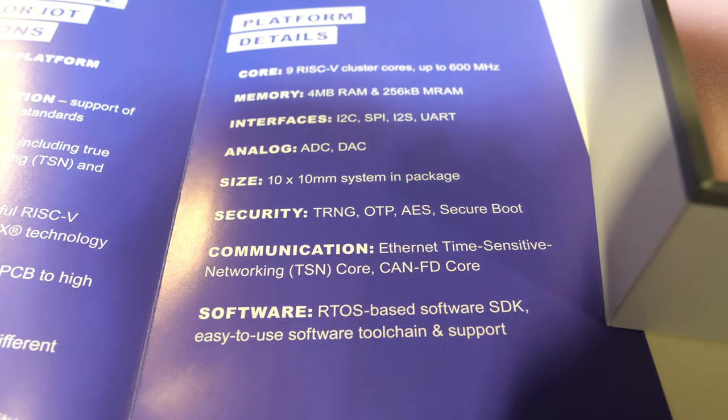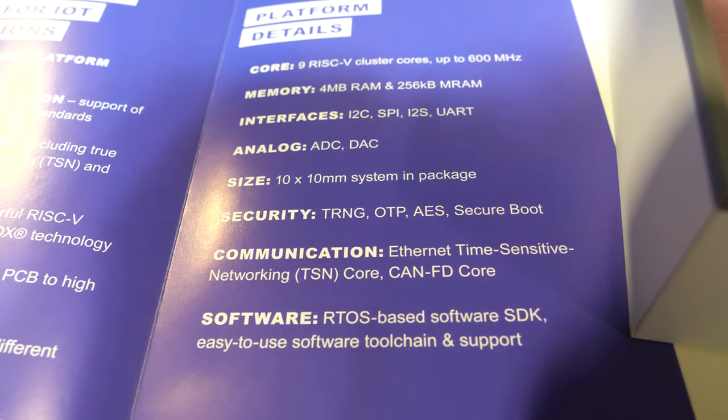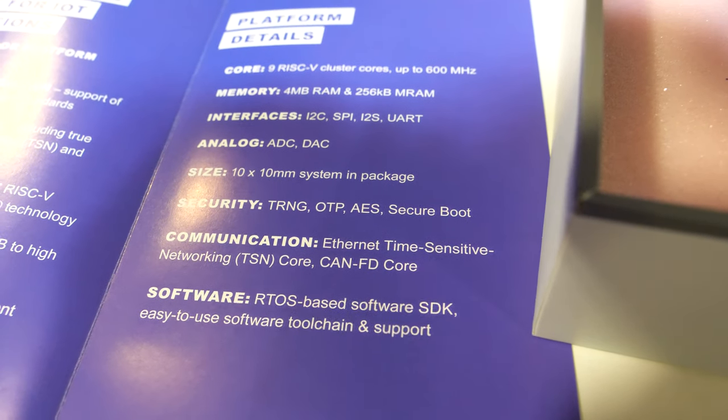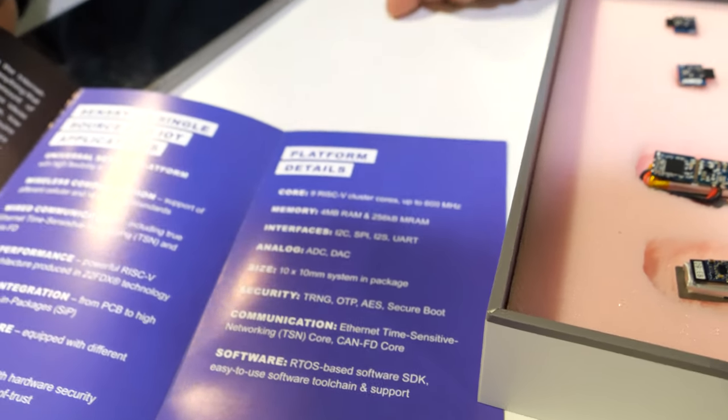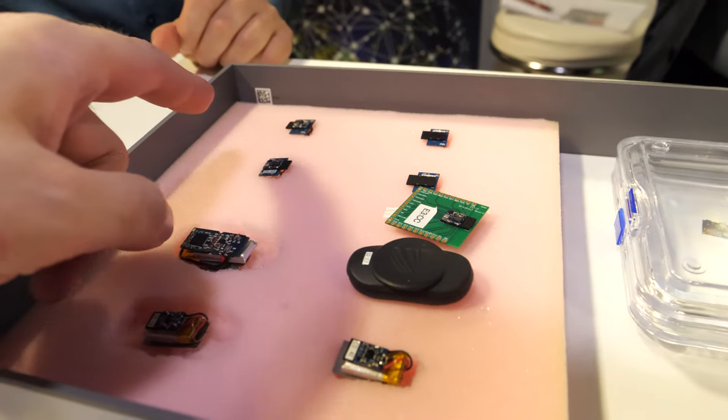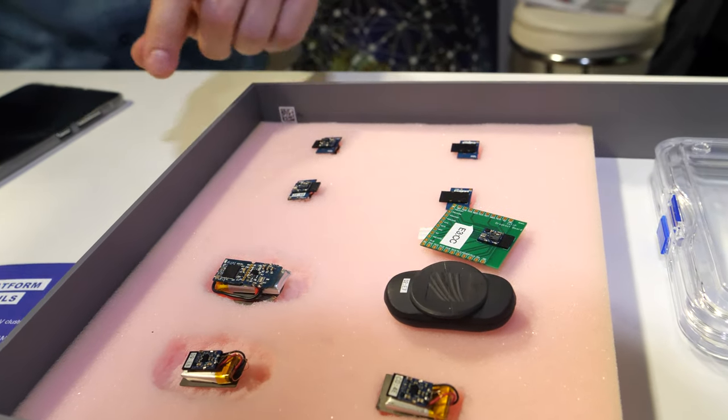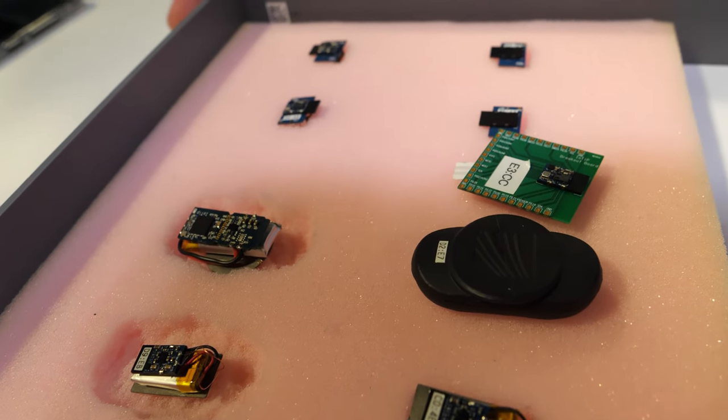And it says Ethernet time sensitive networking and CAN FD, it sounds like something for the cars or no? It's for industrial applications more in that case. Both these connectivities, CAN flexible data rate is often used in industrial area and also Ethernet time sensitive networking is quite new standard which is completely implemented in the device as an IP core.